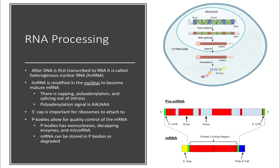Let's first talk about the 7-methylguanosine cap, also sometimes called a guanine cap, which is added to the 5' end of the RNA. As you can see here, this is the cap in that diagram. This cap is important because it allows the ribosome to initiate translation by binding to this cap. In other words, you need this 5' cap for ribosomes to turn RNA into protein.